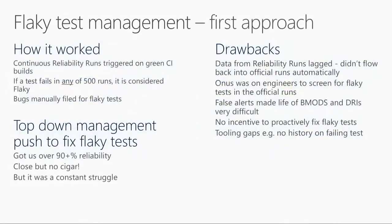The way the system worked: it would pick a green build, run the reliability run on that L2 test, and if a test fails in any of the runs, we'd say that test is flaky. It needs to pass every single time. If it's flaky, you file a bug and expect the team to fix it. It shows up in the team scorecard.